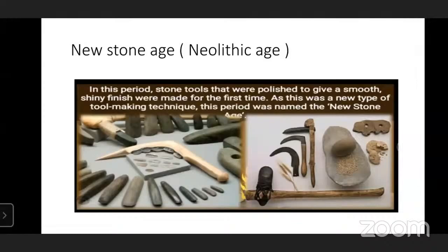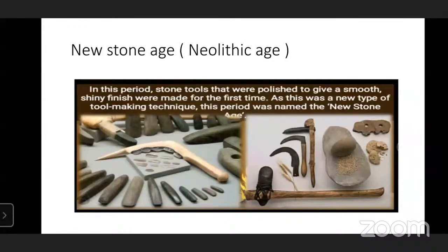The next period is the New Stone Age, or Neolithic Age - 'Neo' means new. In this period, stone tools that were polished to give a smooth, shiny finishing were made for the first time. As this was a new type of tool-making technique, this period was named the New Stone Age.